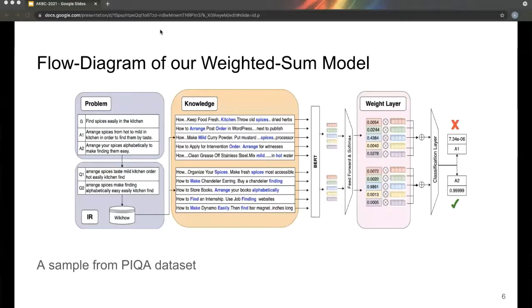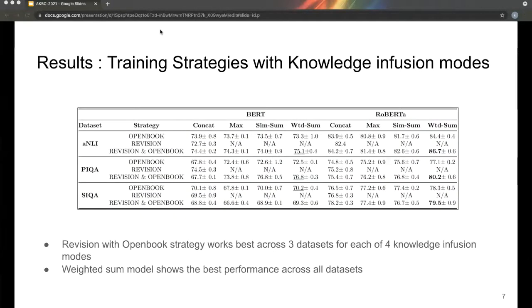In this sample of Pika dataset, we show how our weighted sum model works. Results: we find the revision with open book strategies along with the weighted sum model works best.